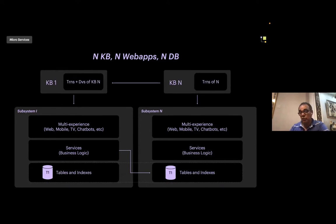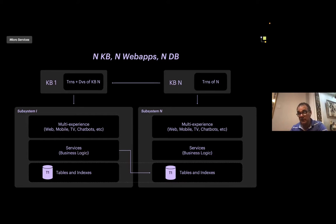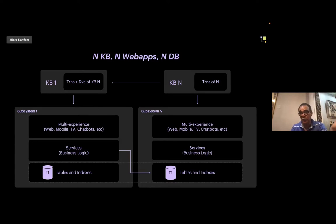Another possibility is having N knowledge bases with N web apps and N databases — they are not joined and do not share tables. In this case, to access data from KB1 to KB2, you need to export data views. You will have access from KB1 to the data model in KB2 so you can interact with that data. It's important to know who the data owner is, and you can work using those data through all the access mechanisms available.